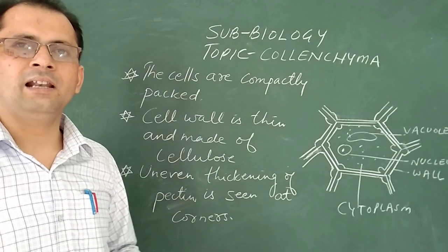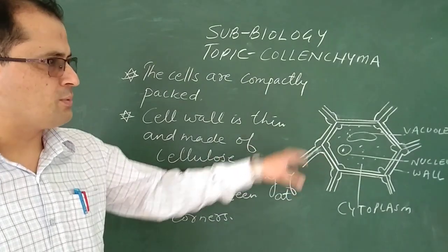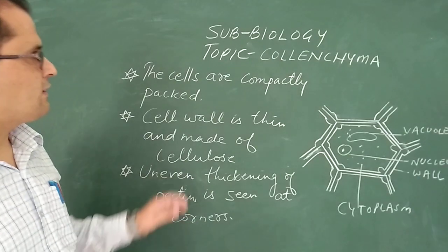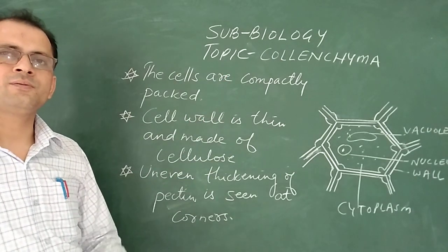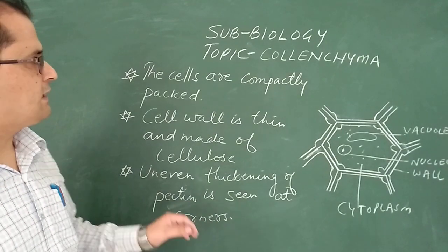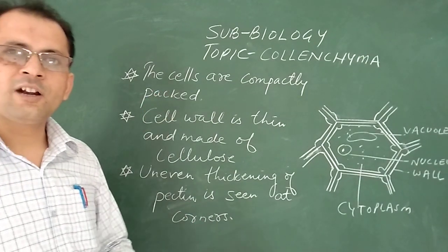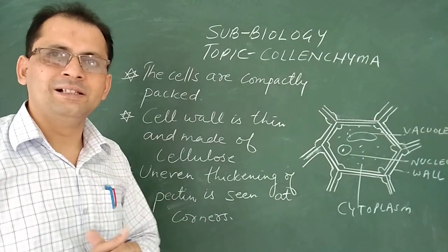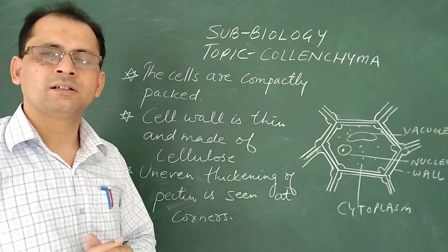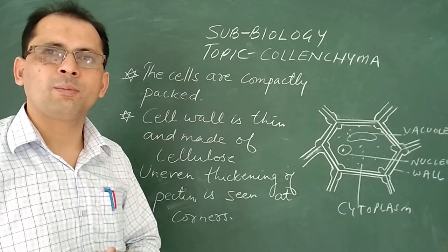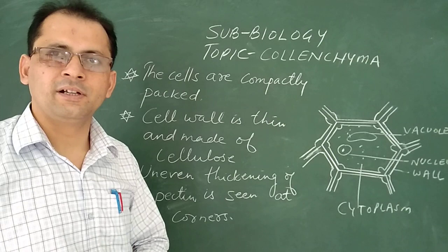So when we see the cell under microscope we can observe these structures easily. Now what are the special features or general features of this collenchyma tissue. You can see the cells are compactly packed, means between two cells there is no space. So we can see the intercellular space in case of collenchyma cells is absent.